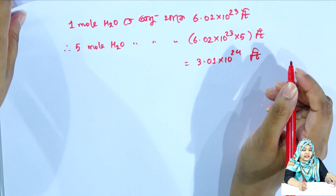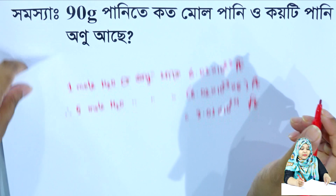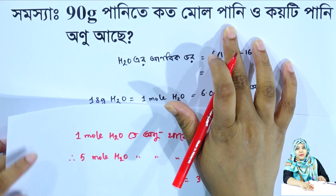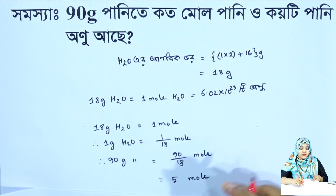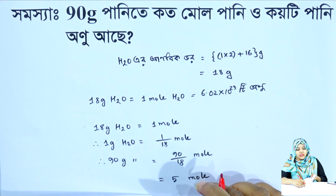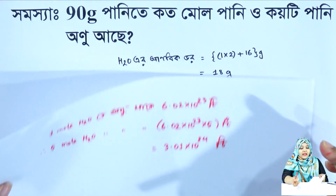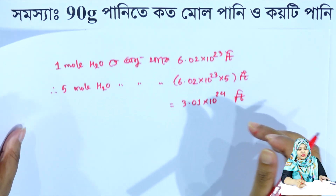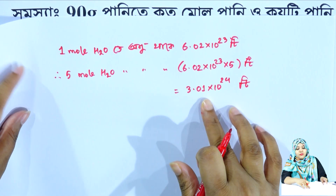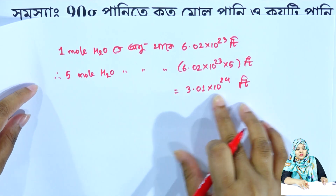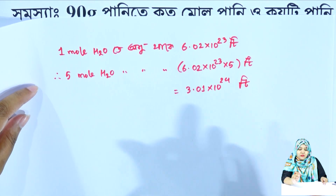So, 90 gram of water is equal to 5 mole of water, which is equal to 3.01 into 10 to the power 24 molecules.